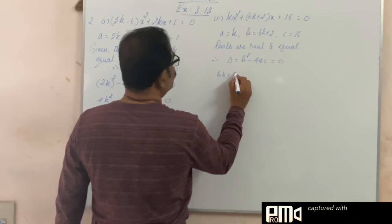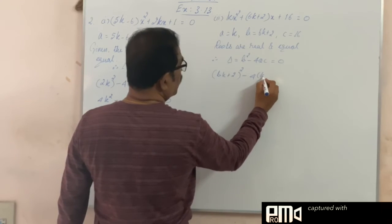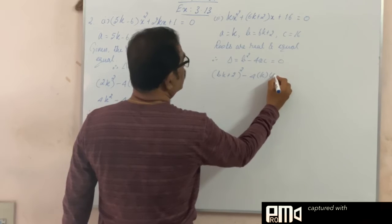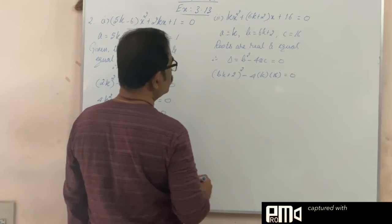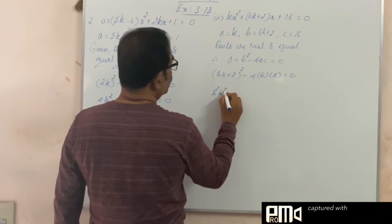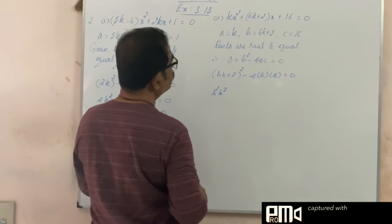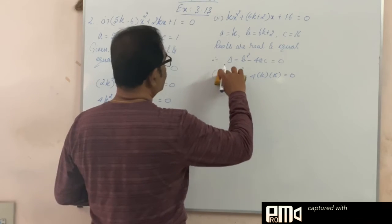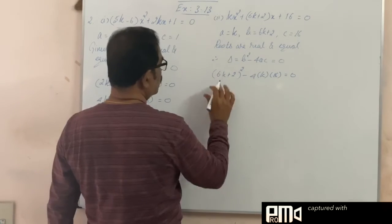So, b, 6k plus 2, the whole square minus 4 into a is k, c is 16, equal to 0. Now, I expand this. b square, this is 6k, 6k plus 2, the whole square.